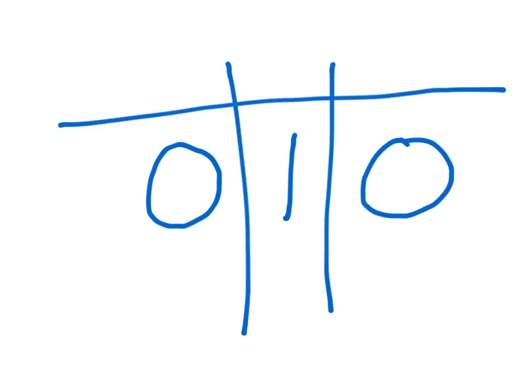Binary is base 2. What that means is that, rather than each column being 10 times greater than the column to the right, it's going to be 2 times greater — in other words, it's going to be double, twice as big. So when you write out a binary number like this, we can put it in columns just like we normally would. We always have the ones column, and that's true in any base, whether it's base 10 or base 2. You always have your ones column on the far right. Next to that, we have the base, whatever the base happens to be. In this case, since we are using binary, the base is 2.